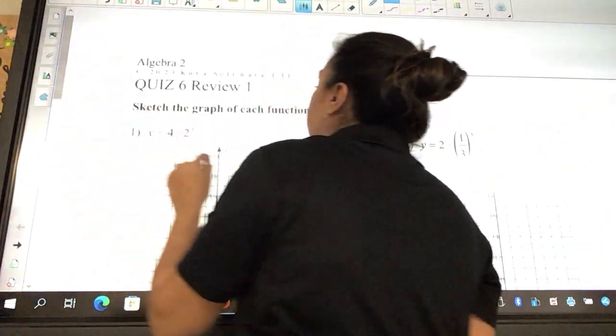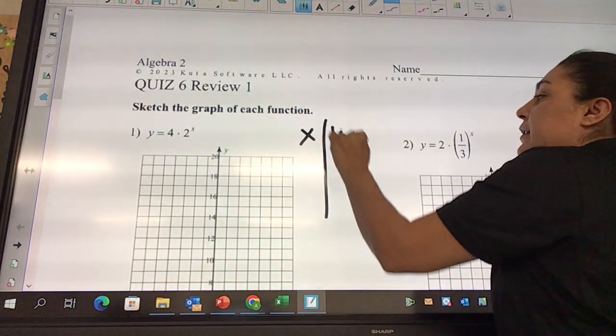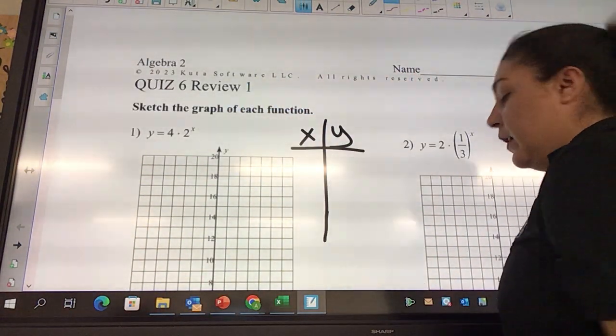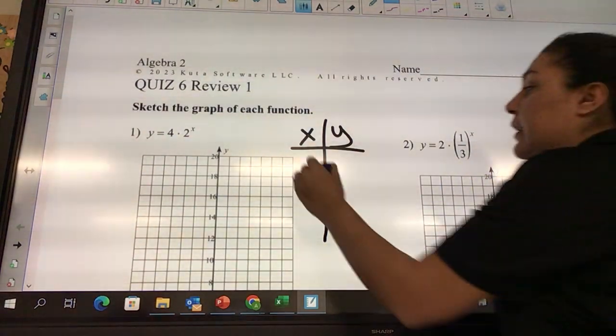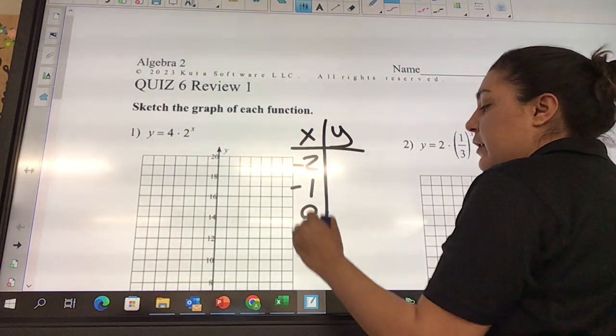So we can type this in. We're going to say X comma Y, and the faster you guys type today, the faster we'll be done. X comma Y, and we're going to say negative 2, negative 1, 0, 1, and 2.